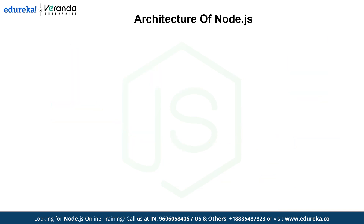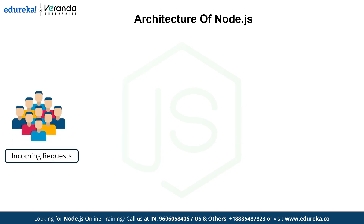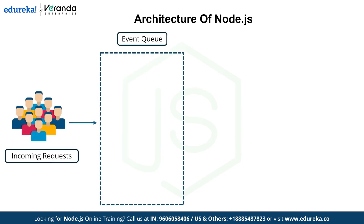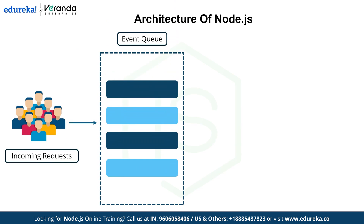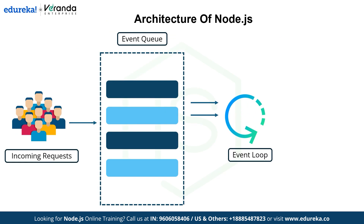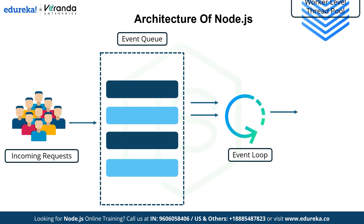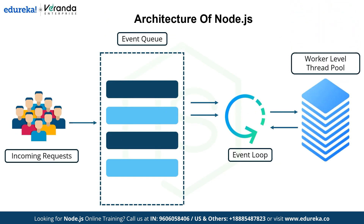Now let's take a look at the architecture of Node.js. When incoming requests arrive, they first enter the event queue. Node.js uses an event-driven architecture, so the event loop continuously monitors the queue for tasks. If a task requires minimal computation like reading from memory, the event loop processes it immediately. However, if tasks involve heavy operations like file I/O or database queries, they are sent to the worker thread pool. The thread handles complex work in the background and sends the result back to the event loop, which then responds to the client. This non-blocking mechanism makes Node.js highly effective and ideal for handling multiple requests.